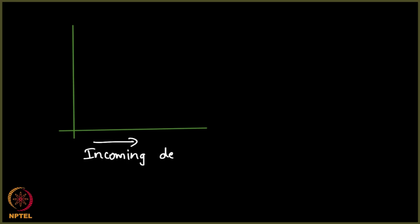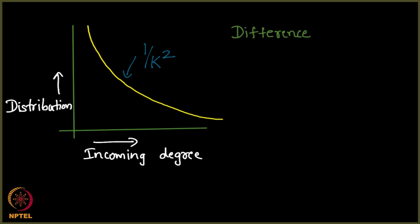So what have we observed so far? When you plotted the incoming degree versus the distribution, you got this for web graphs, but this was 1 over k square, but then there is a difference. What is the difference? Normal versus power law.